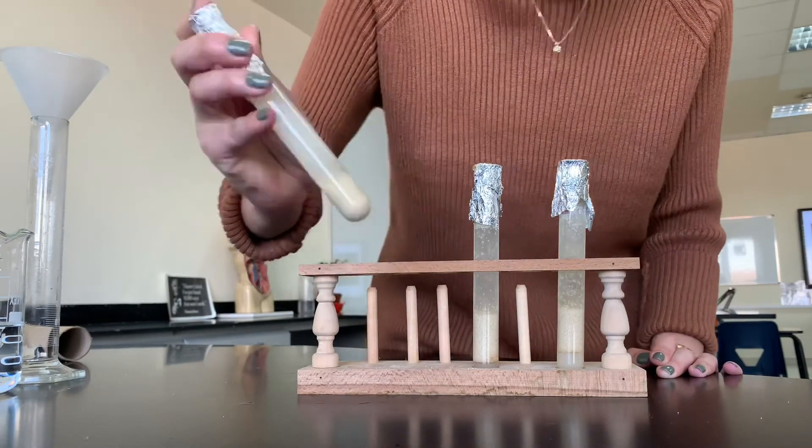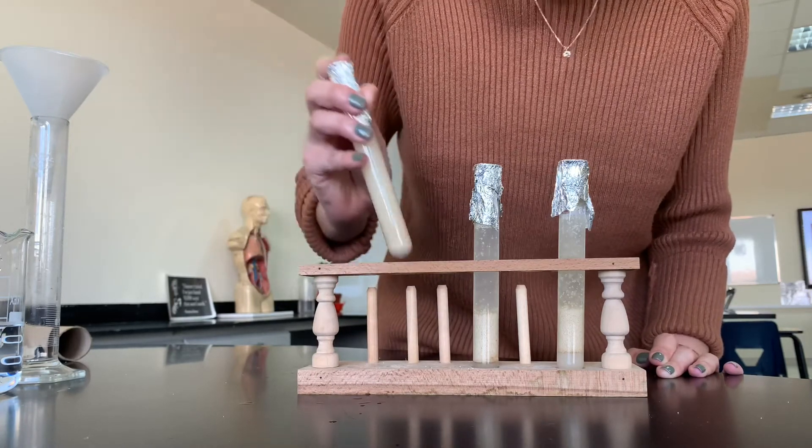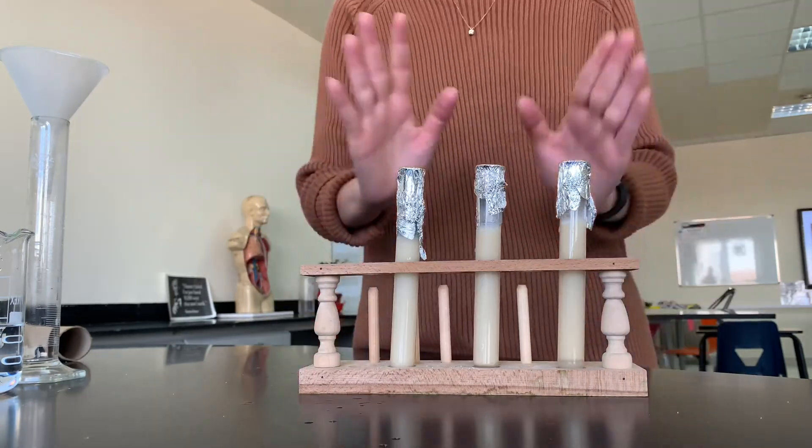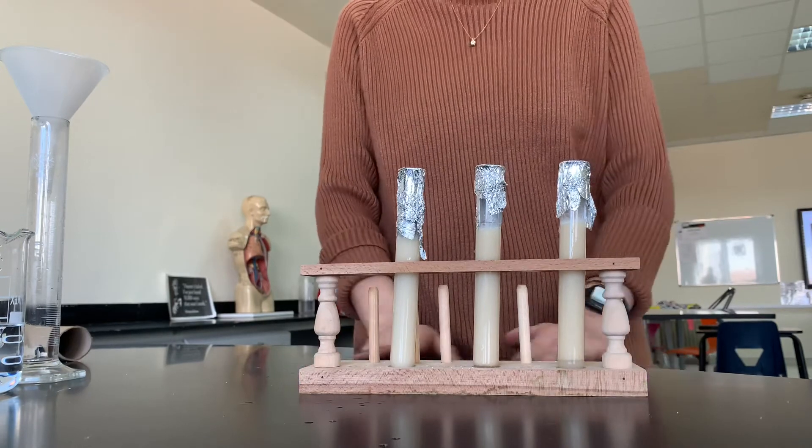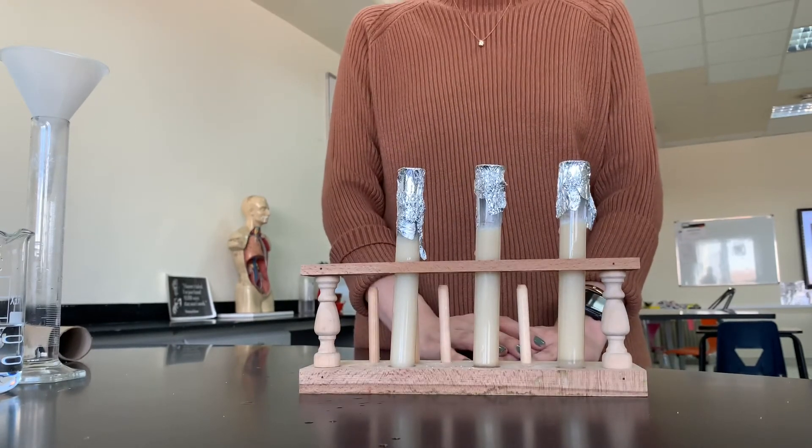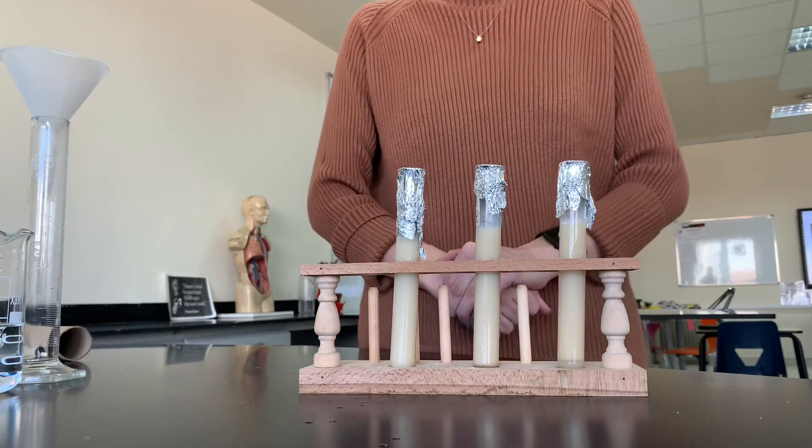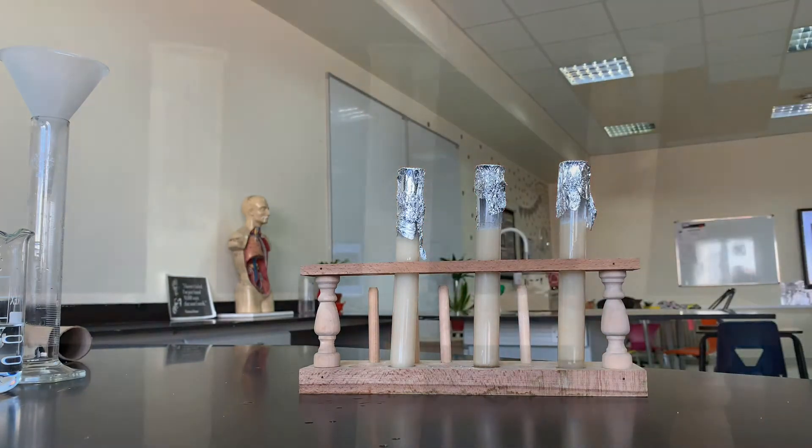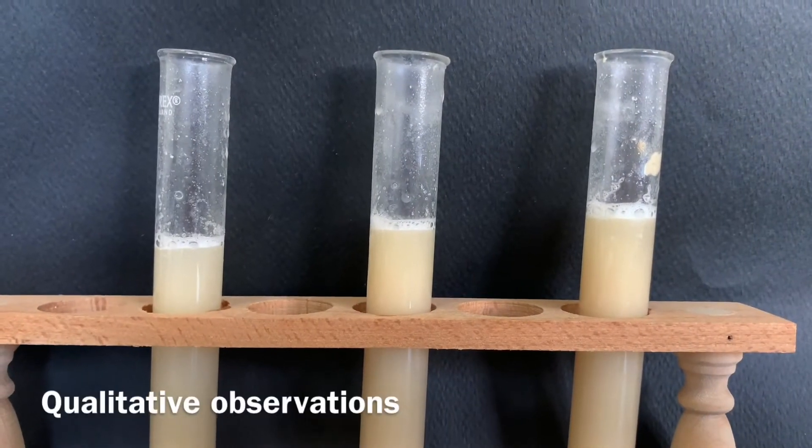Next I'm going to give the test tubes a bit of a shake to mix the sugar and yeast together. Once the test tubes have been gently mixed, I'm going to let them sit for around 10 minutes to allow the reaction to take place. All right, it's been 10 minutes. Let's take a look at the results.